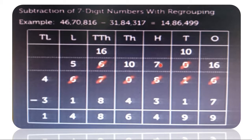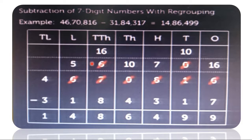At the tens place we have 0, so we will borrow from the hundreds place. 0 becomes 10. 10 minus 1, we got difference 9. At the hundreds place we have 7. So 7 minus 3, we got difference 4. Now at the thousands place we have 0. We couldn't subtract 4 from 0, so we will borrow from the ten-thousands place. 0 becomes 10. 10 minus 4, we got difference 6. Here we have 6. We couldn't subtract 8 from 6, so we will borrow and 6 becomes 16. 16 minus 8, we got difference 8.